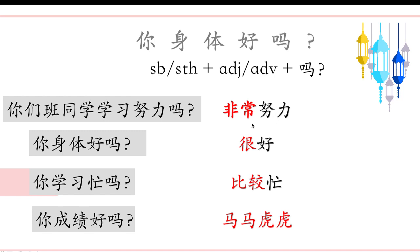If we want to modify the degree of an adjective like 努力 or 好, we use adverbs. Adverbs modify adjectives. 比较 is an adverb. 非常 means extremely. And there's also 很 meaning very.